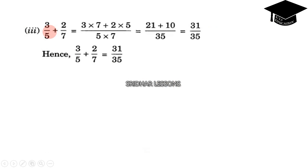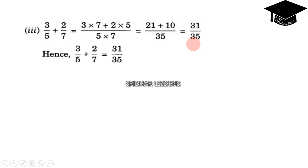Next: 3 by 5 plus 2 by 7. The LCM is 5 into 7, that means 35. We cross multiply: 3 into 7 plus 5 into 2, that is 21 plus 10, which is equal to 31 by 35. So 3 by 5 plus 2 by 7 is equal to 31 by 35.